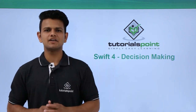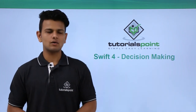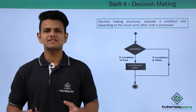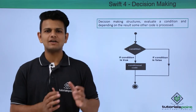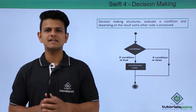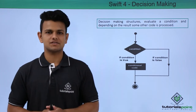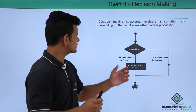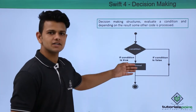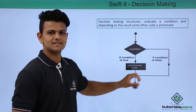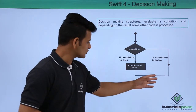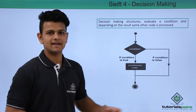In this video we will learn about decision making. Decision making structures evaluate a condition, and depending on the output of the condition, some other code is processed. First the condition will be analyzed, then if the condition is true the code will be executed, and if the condition is false then we will come out of that loop and exit.